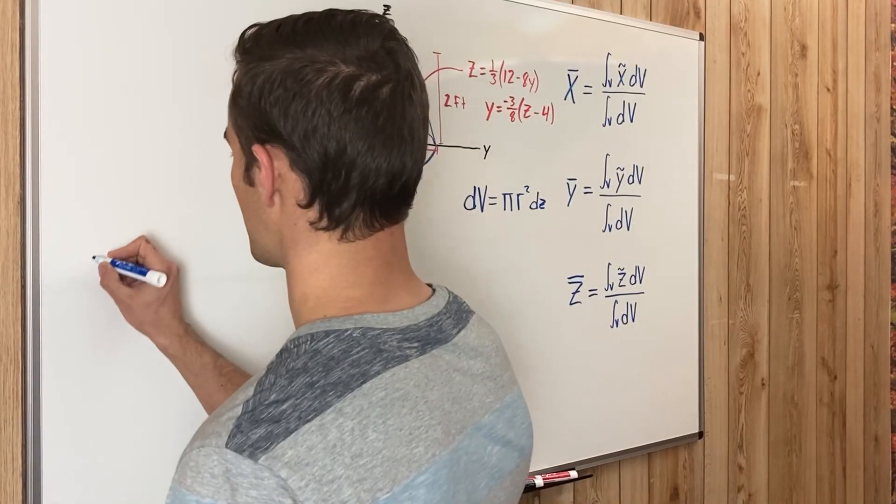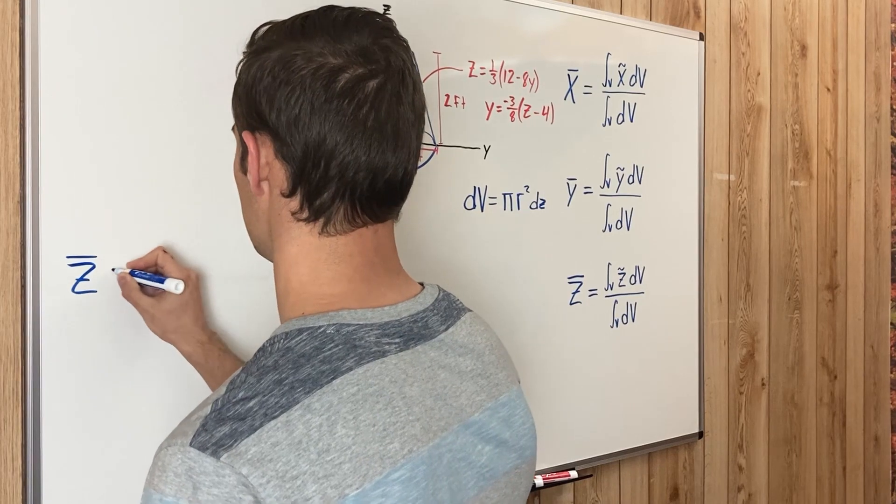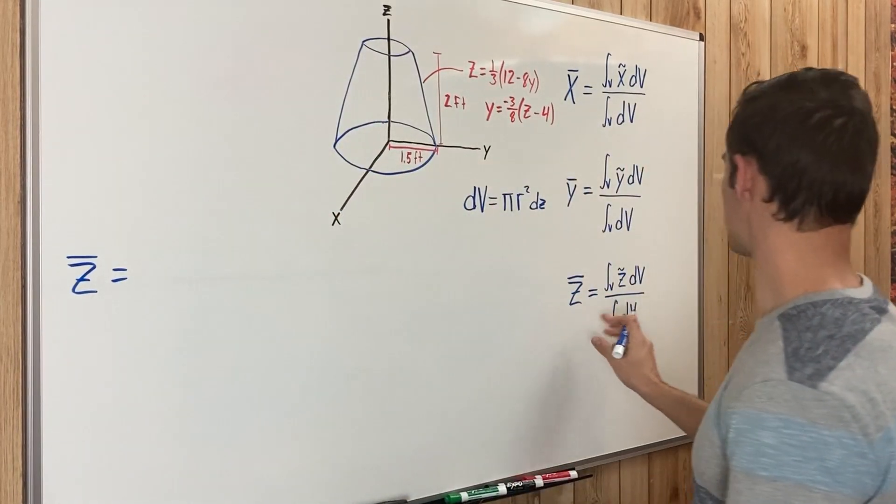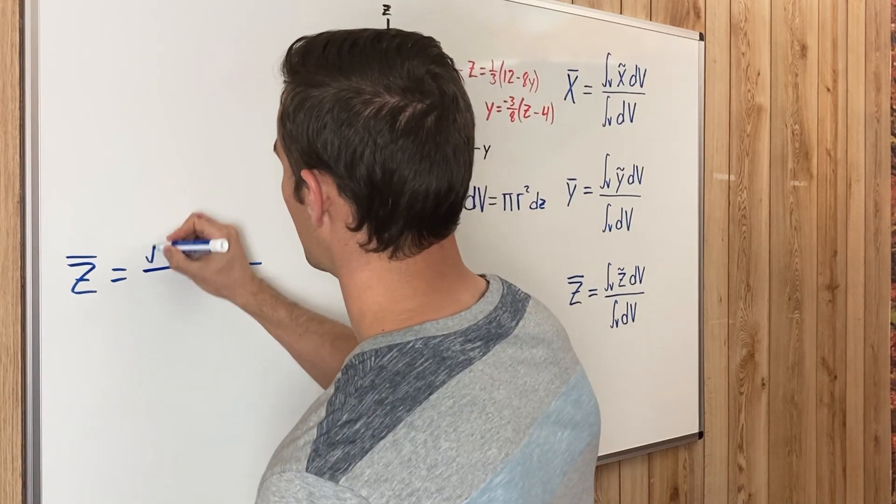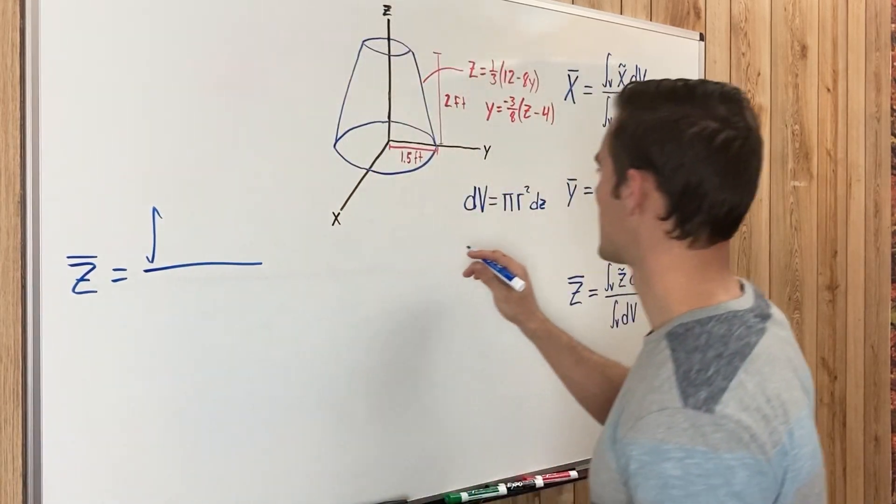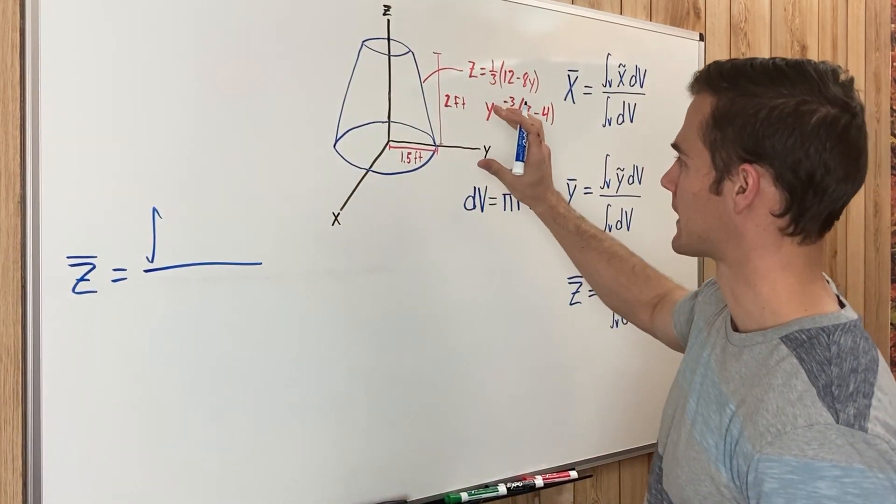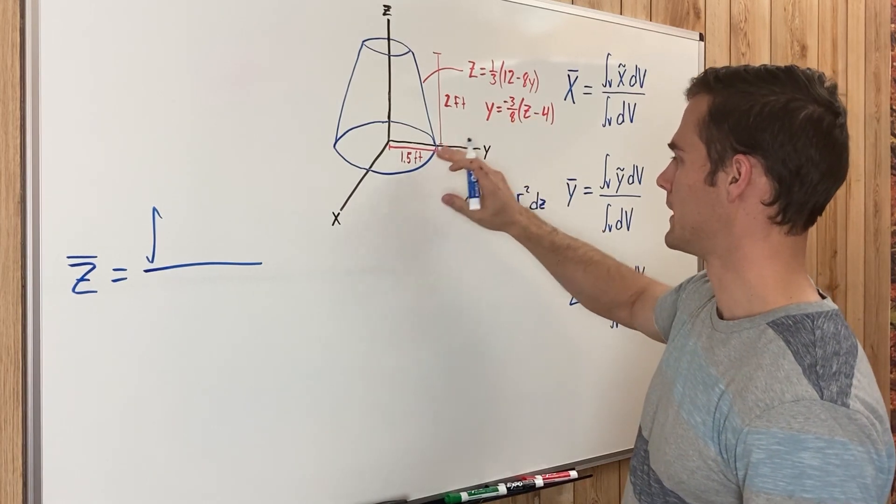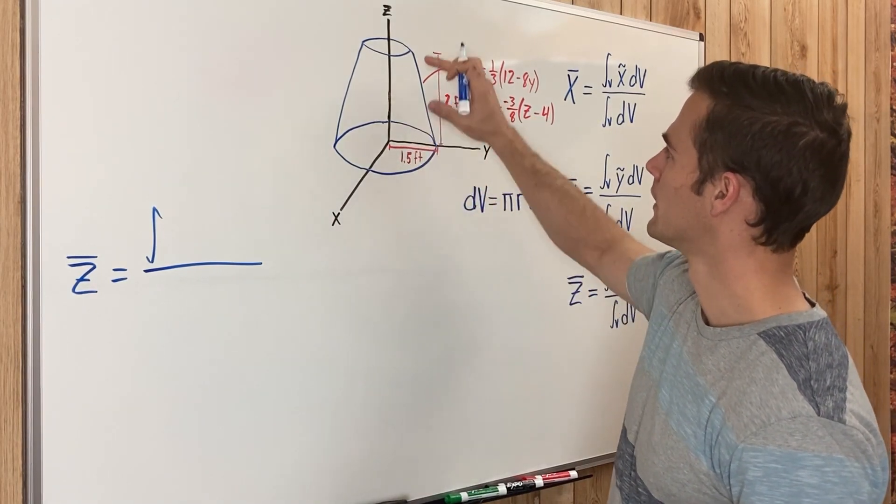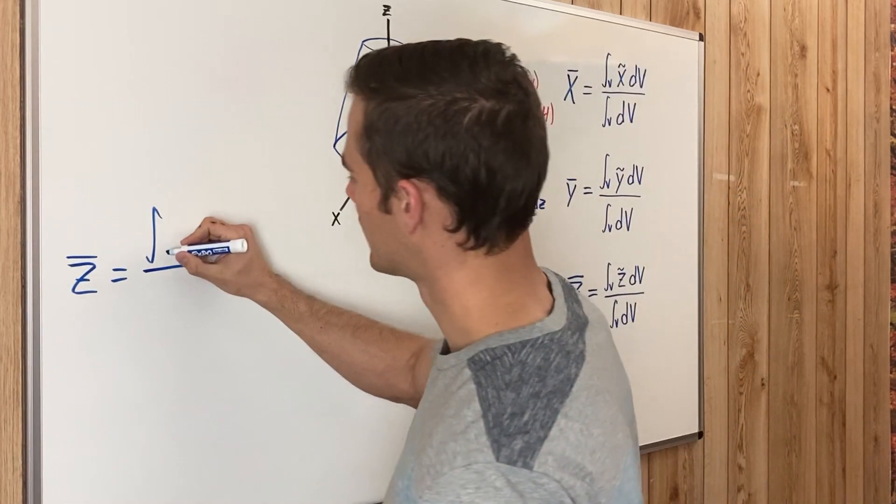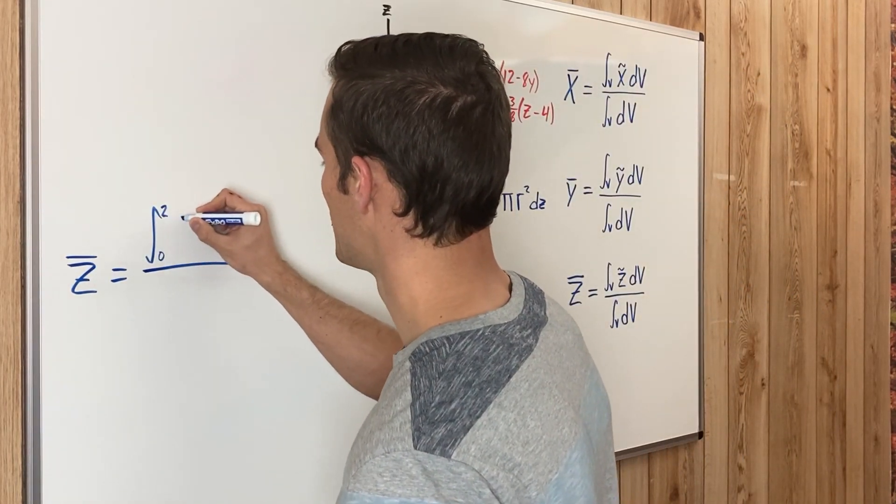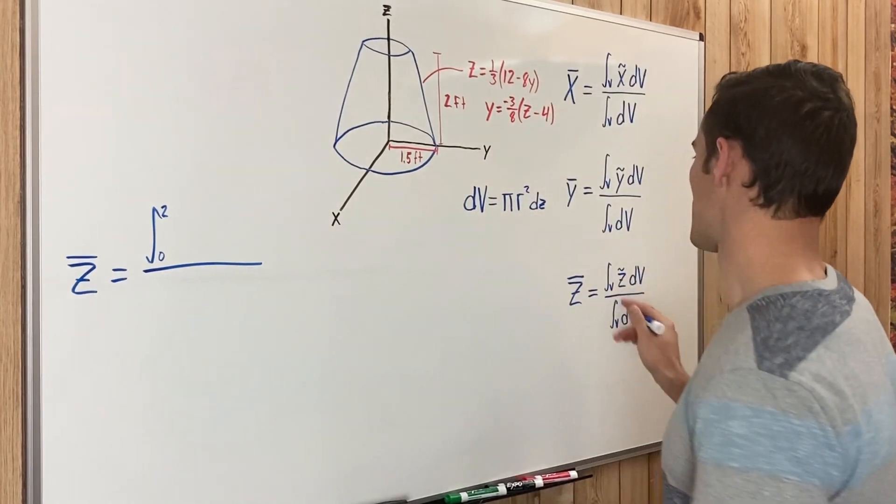So to find Z̄ we are going to use our equation we have over here. So Z̄ is the integral across the volume, and we're going to be integrating with respect to Z. So we're going to be integrating from zero to two because the cone frustum is two feet tall, so zero to two. And then because we're integrating with respect to Z, Z̃ is going to be just Z.